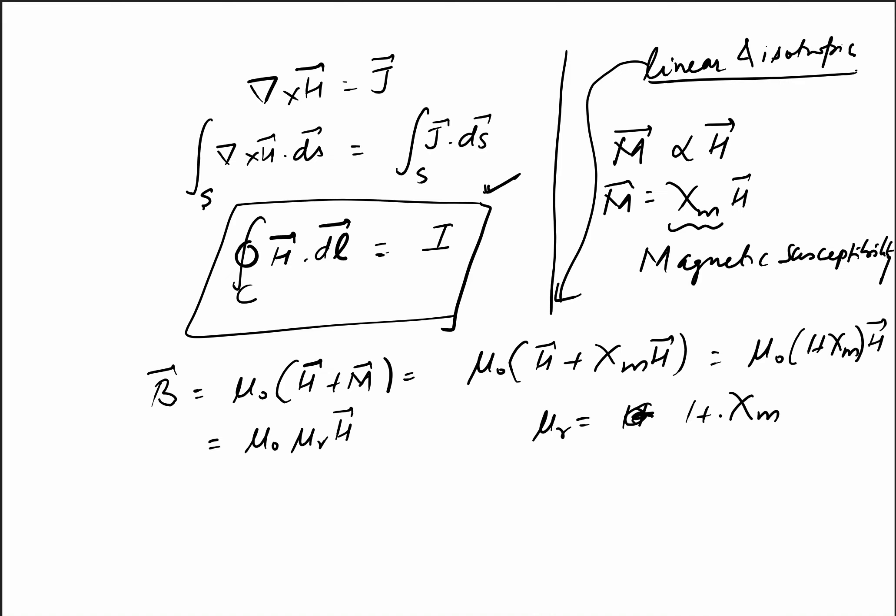For linear and isotropic media, we can write B = μH, where μ = μ₀μᵣ is the permeability of that medium. Relative permeability μᵣ = μ/μ₀ is a dimensionless quantity, and μ is the absolute permeability of the medium.